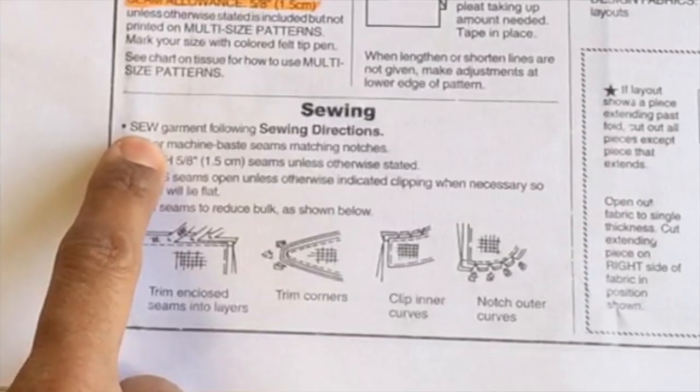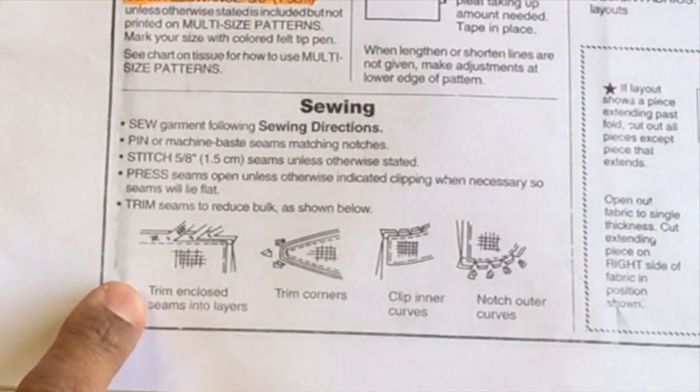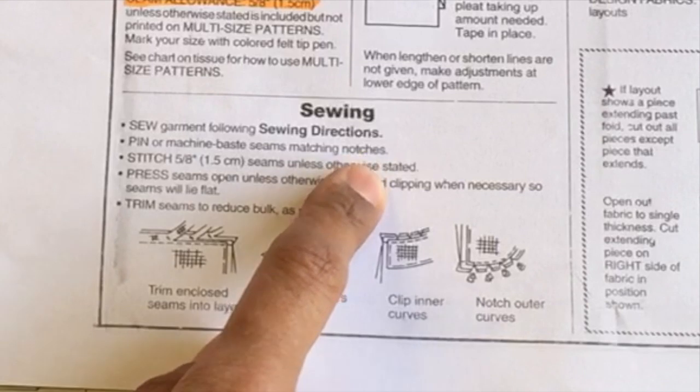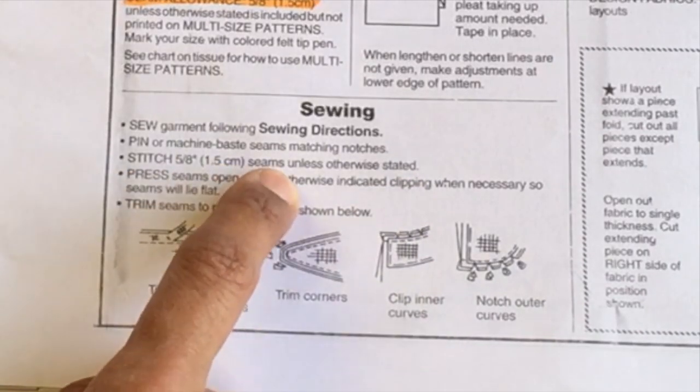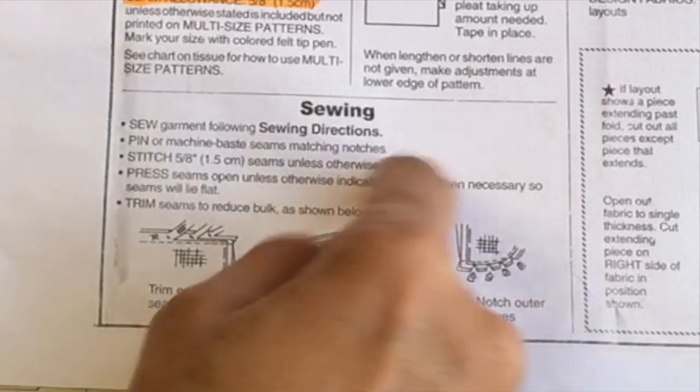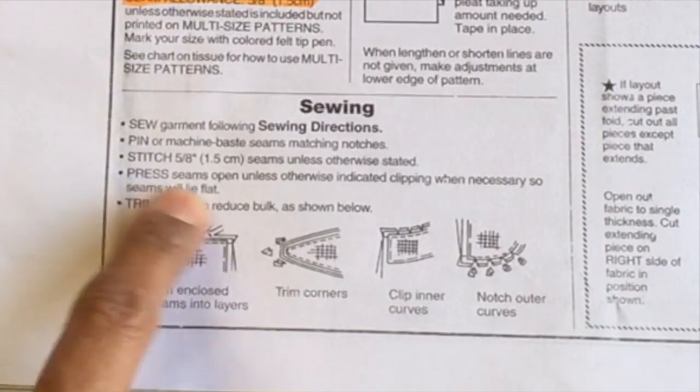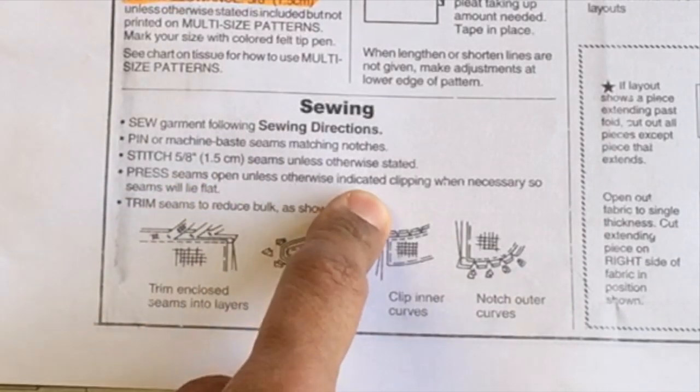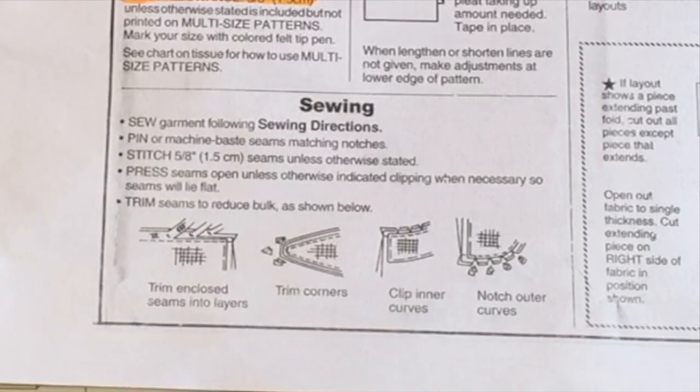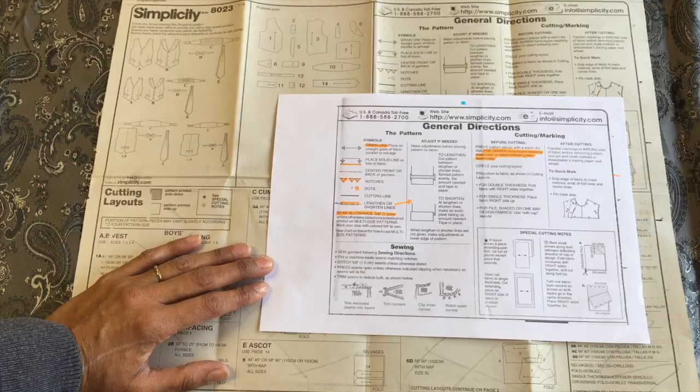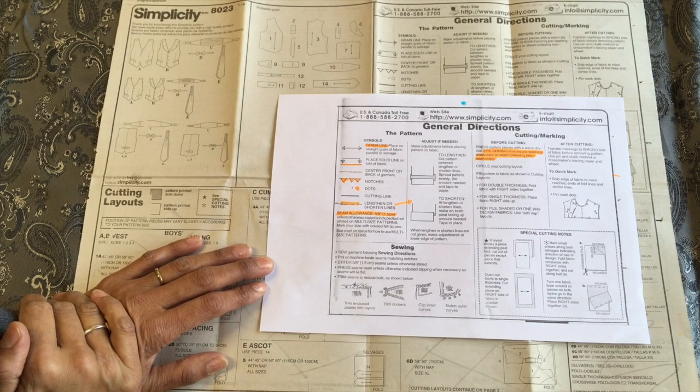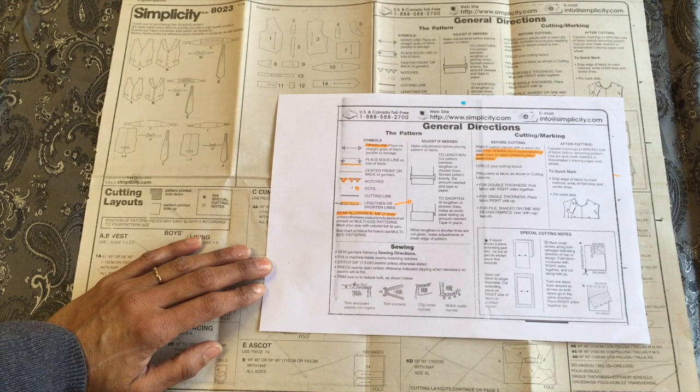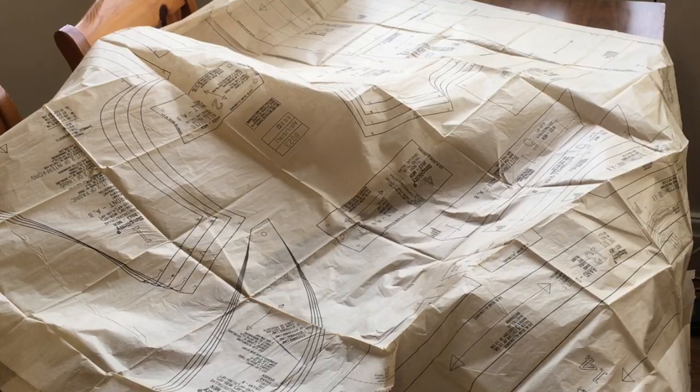We've looked at all of these pieces now. You sew the garment following the sewing directions, that's going through the whole set of instructions on the big sheets. Pin or machine baste seams matching the notches. Stitch 5/8 of an inch seams unless otherwise stated. Press the seams open unless otherwise indicated. So always press as you go, I will definitely recommend that. I think your work will just look superb if you press and go. It just gives you that nice feeling of success, it looks really nice, really crisp, really professional all the way.